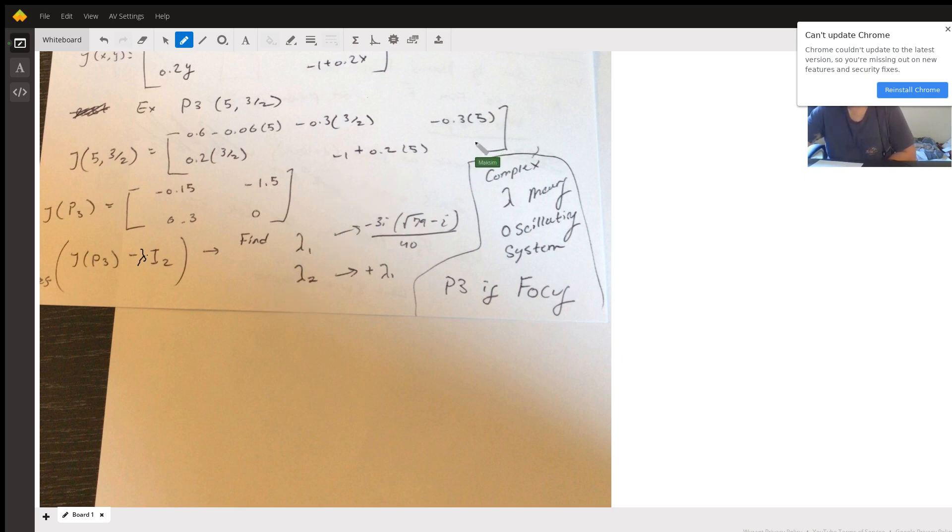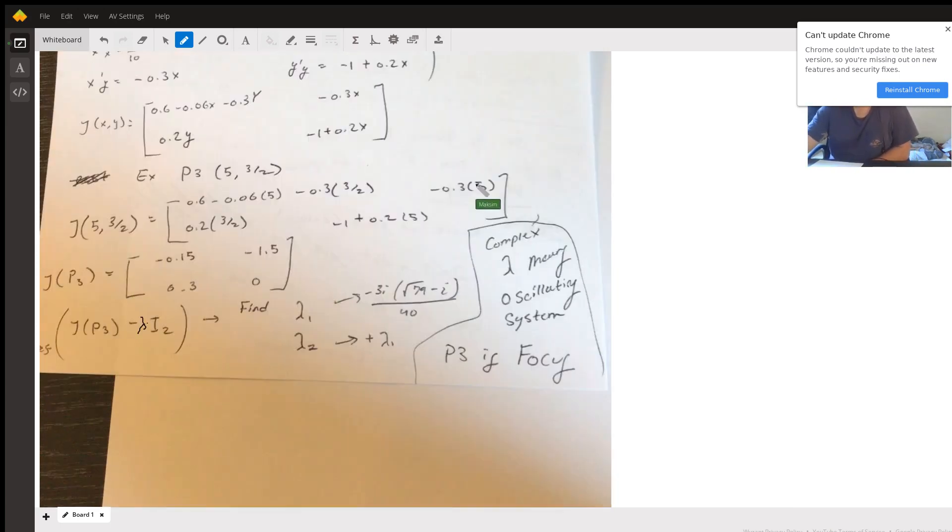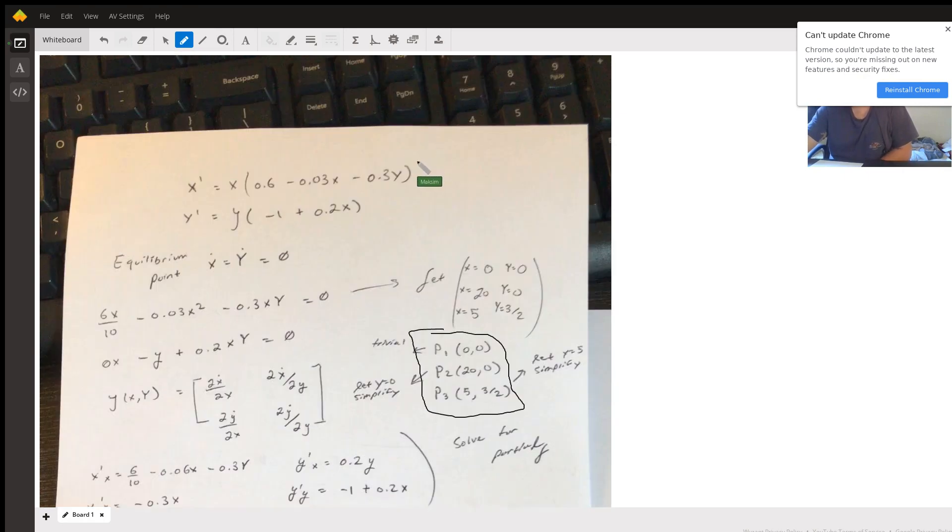In textbooks there's often an entire stability summary given your eigenvalues. This is what the notation, stability, and the oscillatory behavior are. But since we had complex eigenvalues, our system is oscillating and specifically it's a focus, that is the name of it.